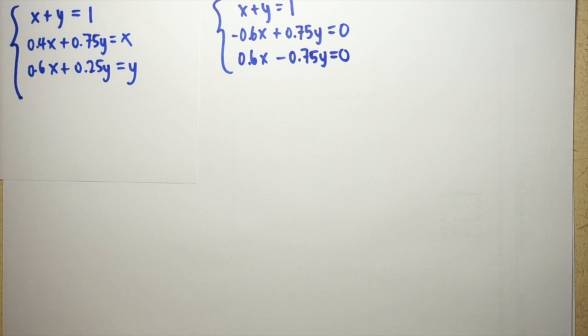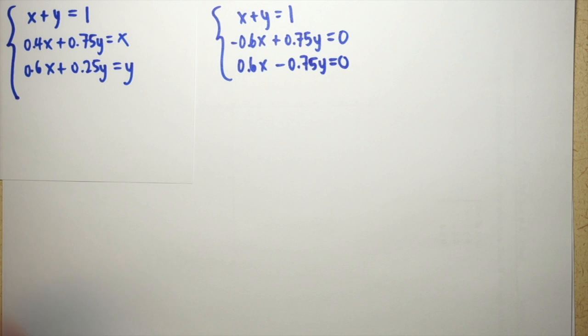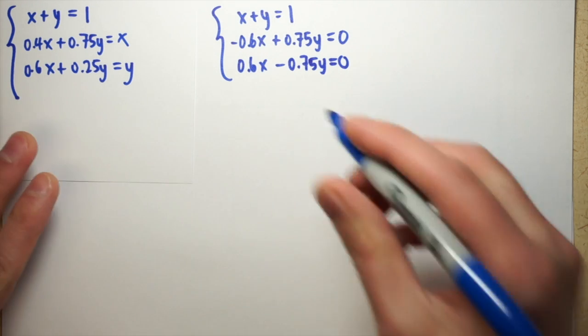And you'll notice that these two equations look very similar. This will always be the case because we're working with stochastic matrices. When we start with a two by two matrix, these last two equations turn out to be almost identical.